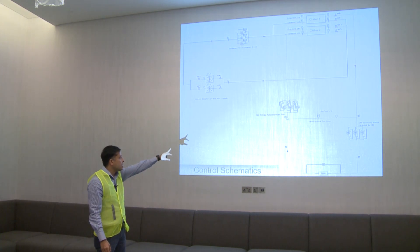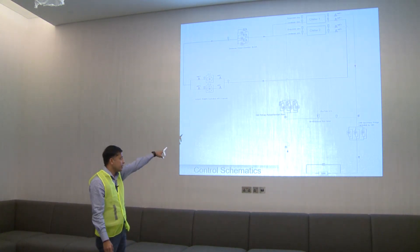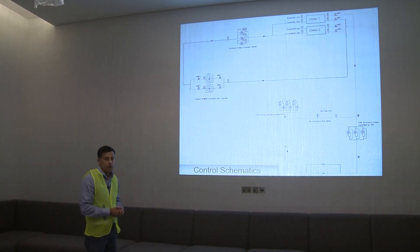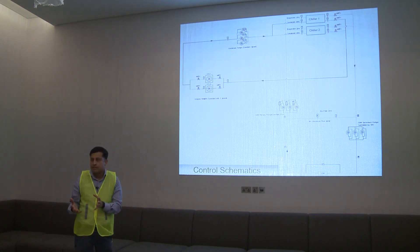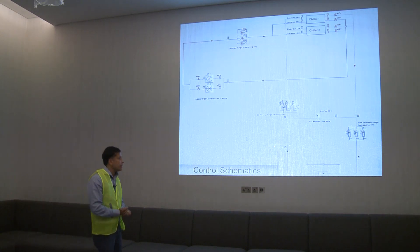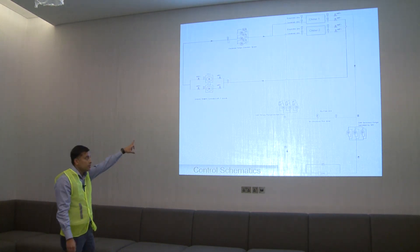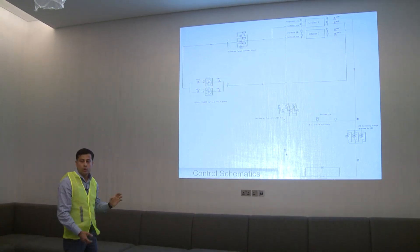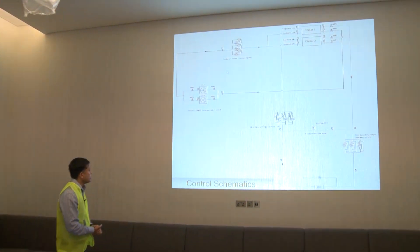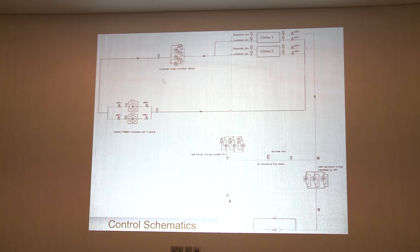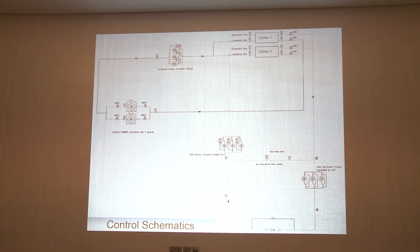The load supply temperature sensor, the chiller return temperature, and the cooling tower supply temperature at the common header are the three critical temperature sensors in the system. If anything happens to these sensors, you should take immediate action to maintain the system in the best condition and keep it running in auto mode.